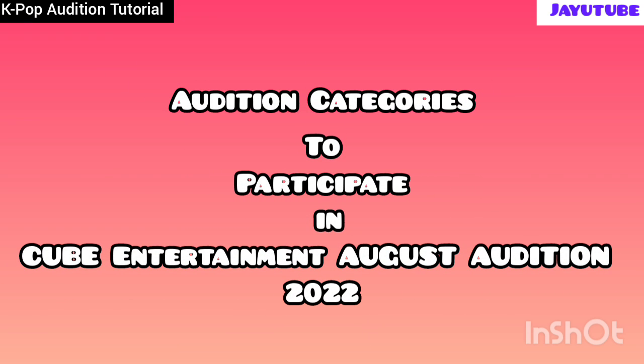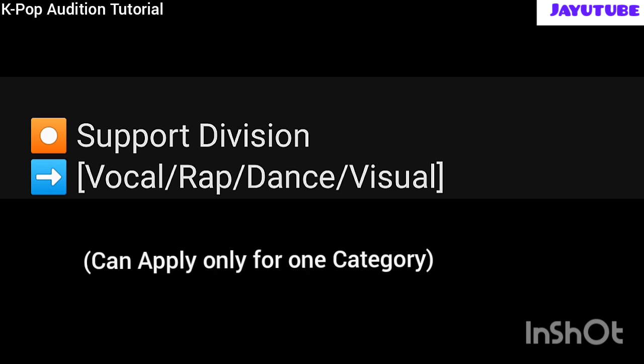Next we will talk about audition categories of Cube Entertainment August monthly audition 2022. There are four categories in which you can participate: vocal, rap, dance, and visual. You have to apply for the one category in which you are best, as there is a condition that you can only participate in one category.